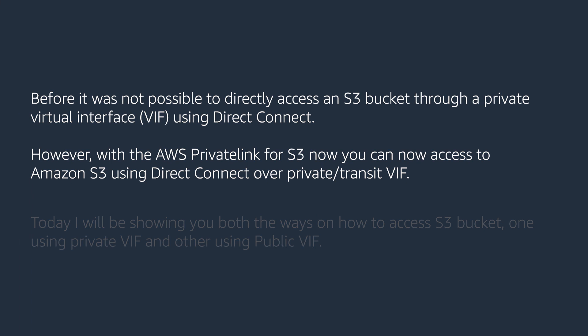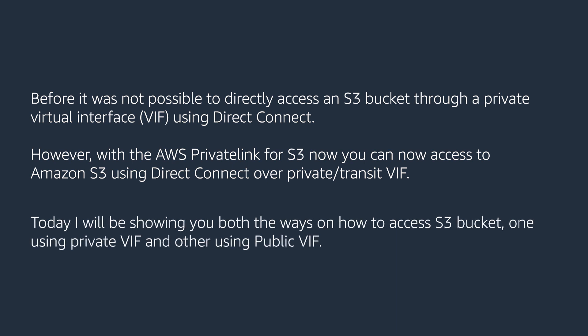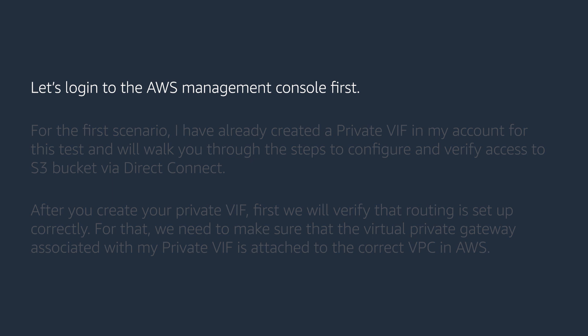Before, it was not possible to directly access an S3 bucket through a private virtual interface using Direct Connect. However, with AWS PrivateLink, you can now access Amazon S3 using Direct Connect over a private or transit VIF. Today I'll be showing you both ways to access an S3 bucket — one using private VIF and the other using public VIF. Let's log into the AWS Management Console first.